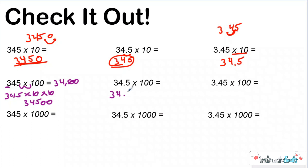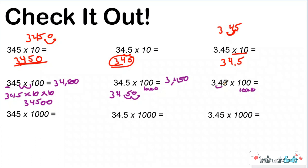So thirty-four and five tenths times one hundred — that's really ten times ten, so I need to move it over one, two place values to the right. My answer is going to be three thousand four hundred fifty. A hundred is ten times ten, so I move the decimal over two place values. Three and forty-five hundredths becomes three hundred forty-five — I moved my digits to make them one hundred times bigger.